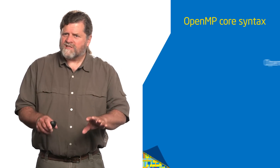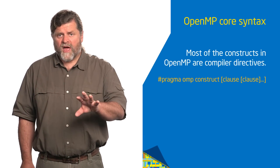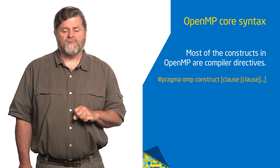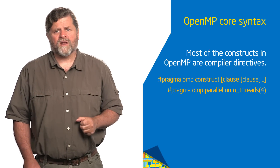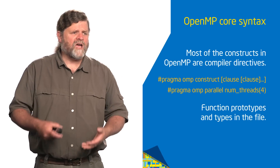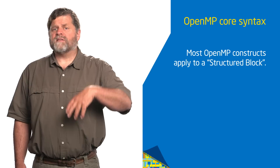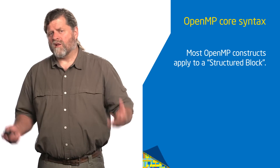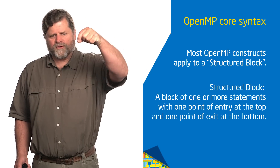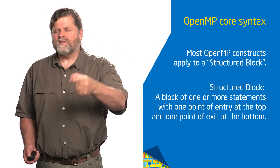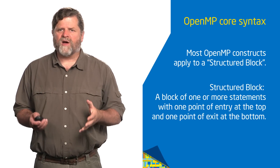The core syntax of OpenMP in C is a pragma: #pragma omp followed by the construct name — for example, #pragma omp parallel — and then clauses that modify it. At the top of your file you'll need to include omp.h for data types and function prototypes. Most OpenMP constructs apply to a structured block: a block of code with one entry point at the top and one exit at the bottom — you can't jump into the middle or out of the middle. It's a simplification the compiler uses to keep things straight. Next we'll be looking at how to actually work with OpenMP and start writing code.